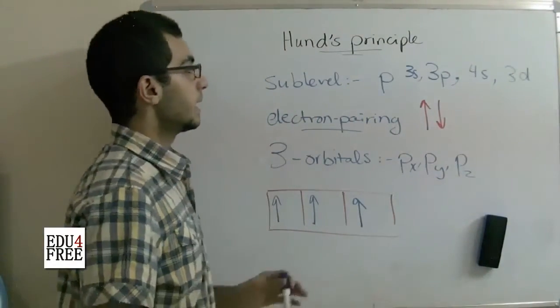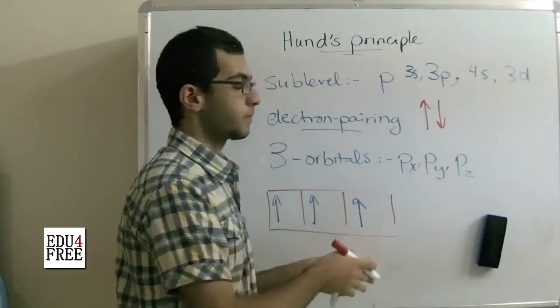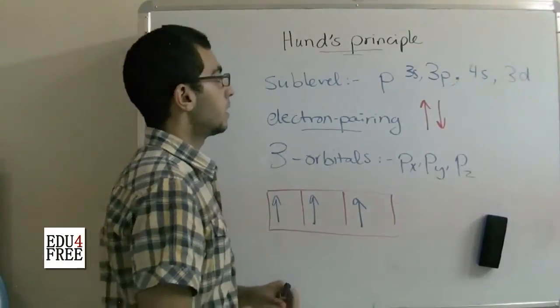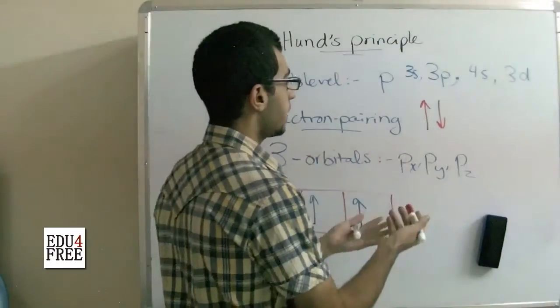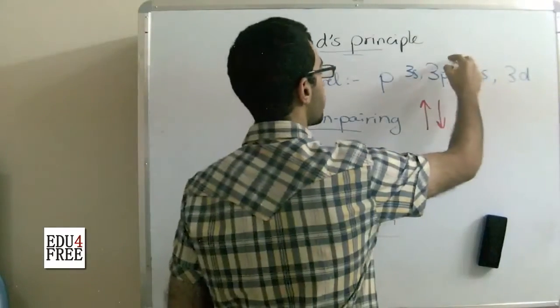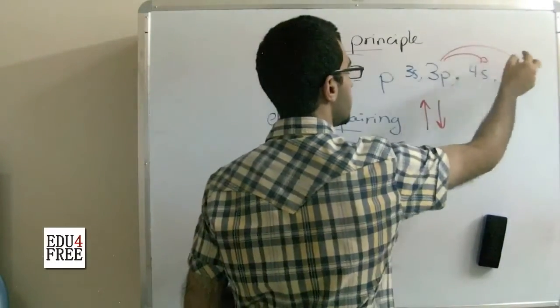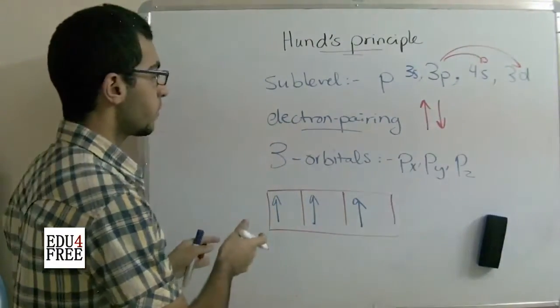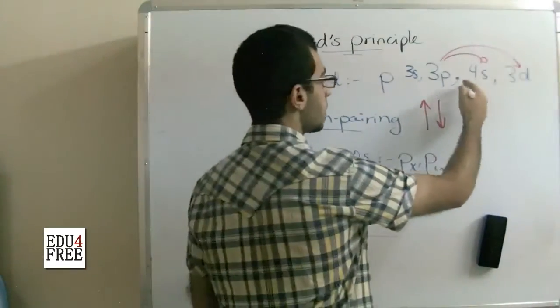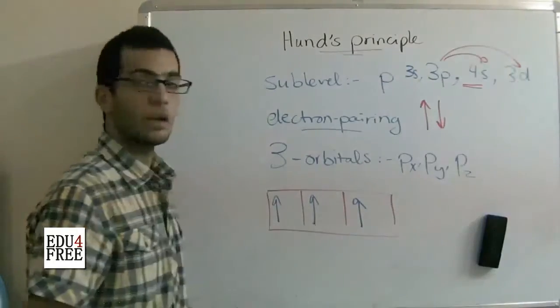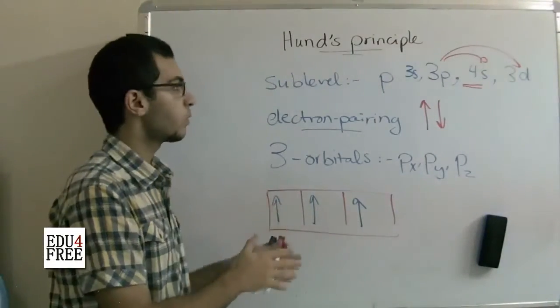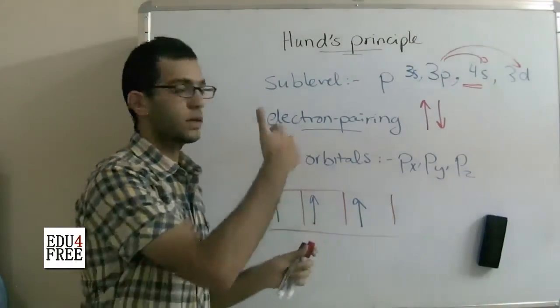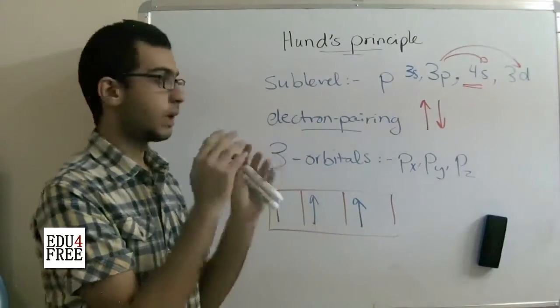So if there is an electron and it's allowed to go to 4s or 3d, the preferable from an energy point of view is to go to the lower energy level even if it will pair with an electron, rather than going to a higher energy level alone.